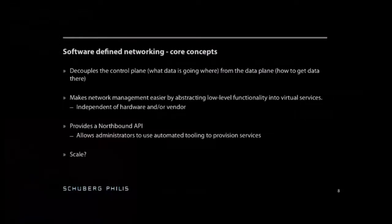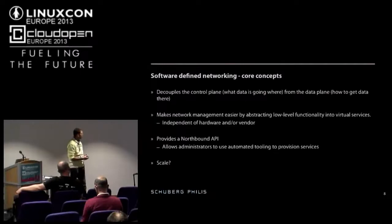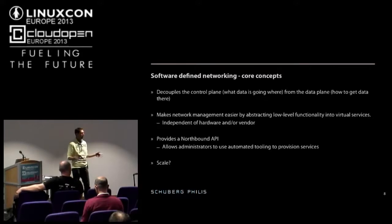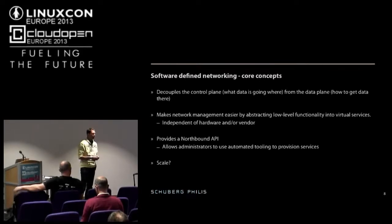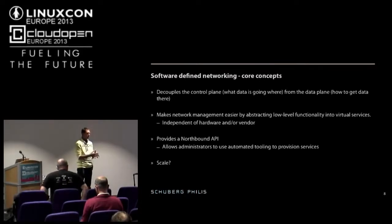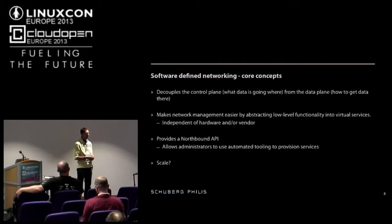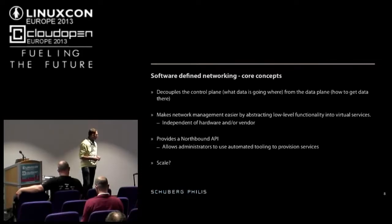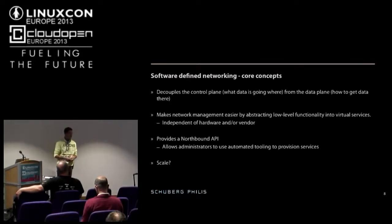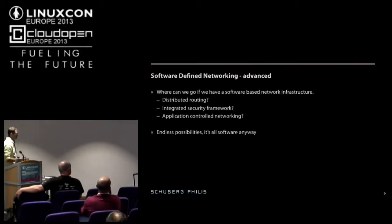SDN decouples the control plane — what data is going where — from the data plane — how the data gets there. It makes network management easier because you can focus on different levels. The network administrator no longer needs a complete overview from all the way down to the ports to what the application is doing with the network. You can segregate and say, okay, I'll leave this bit to the automated tooling. And it provides an API — and as system administrators, anything with an API, we can do stuff with it.